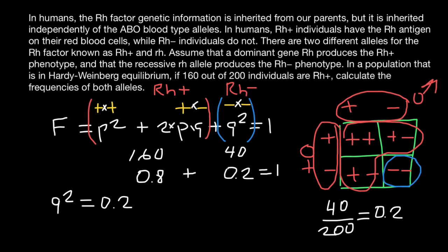In order to find the frequency of the q allele, we just have to take the square root of this number, and we are going to get 0.447. This is a rounded number.